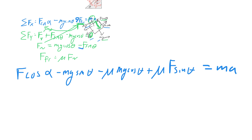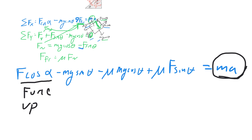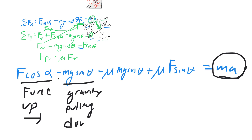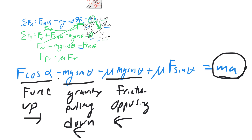Let's take a conceptual step here. Each of the four terms tells us something physical. F cosine alpha is the force driving the block up the ramp — the greater it is, the greater the acceleration. Mg sine theta is gravity opposing the motion down the ramp, hence it's negative. The mu·mg cos theta term is friction opposing the motion, also negative.